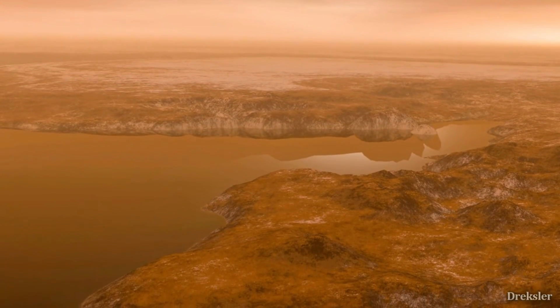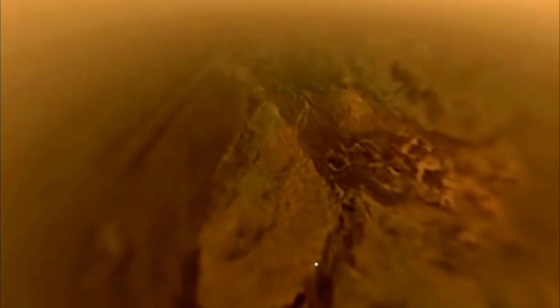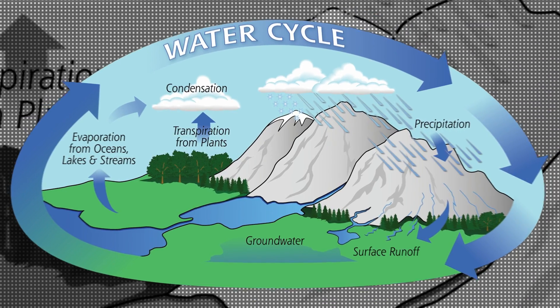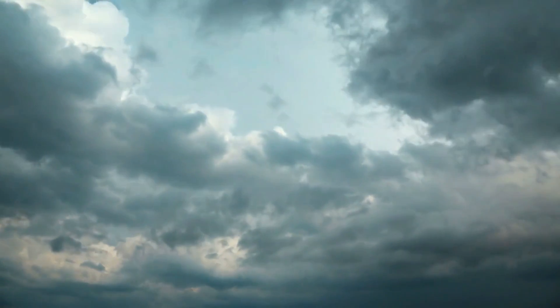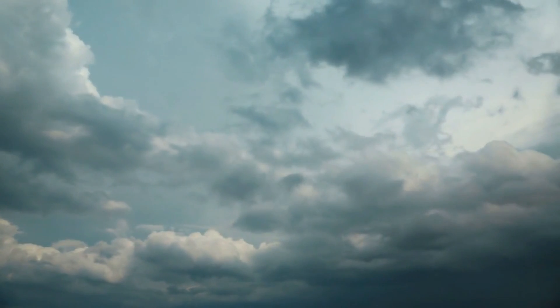Titan's lakes and seas are among its most interesting features. These bodies of liquid are not only the only stable bodies of liquid on any other world besides Earth, but they also support a unique weather cycle, in which methane rainstorms feed into the rivers, which flow into seas, eventually evaporating and forming methane clouds, which feed back into the cycle.